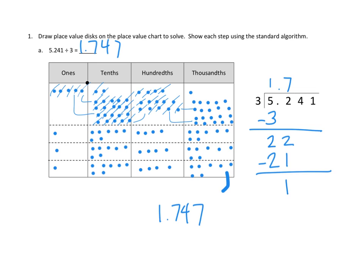We need to move to an even smaller unit. We can think of that one tenth as ten hundredths. We have four other hundredths from the original number, giving us fourteen hundredths total — just as we had over in the place value chart. We can divide those into three groups by putting four hundredths in each group, using up twelve hundredths out of our fourteen, leaving us with only two hundredths.